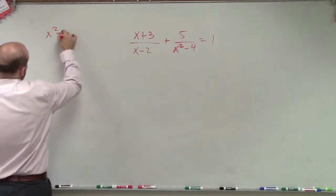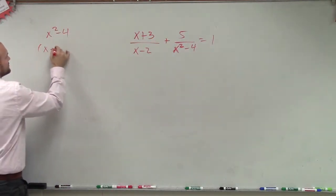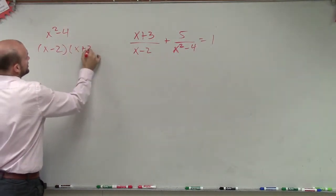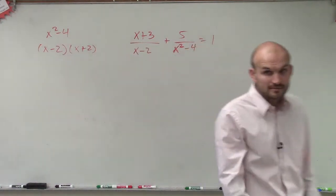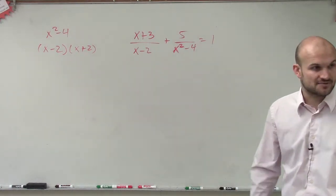That's a difference of two squares because I've been doing my factoring for so long. I know that that is factored as x minus 2 times x plus 2. That's the factored form of x squared minus 4.